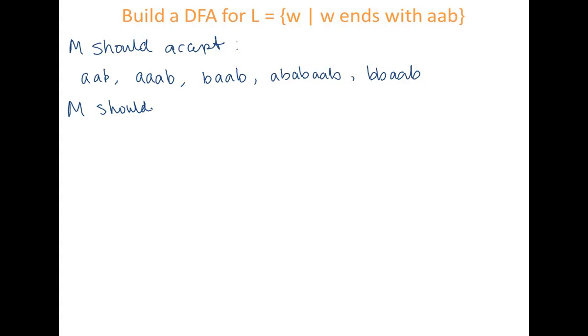M should reject strings that don't end with AAB. So A is a string that does not end with AAB. Also B, AB, AABA, and AABB.